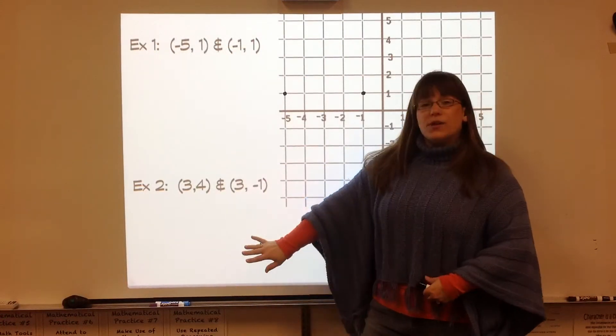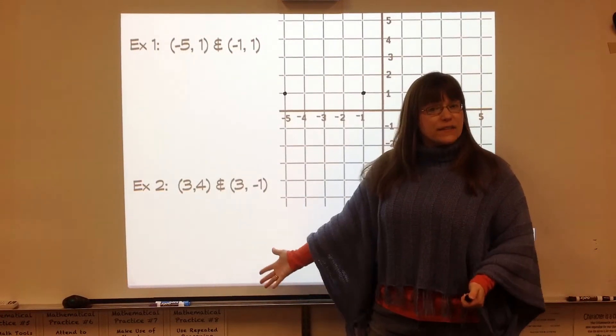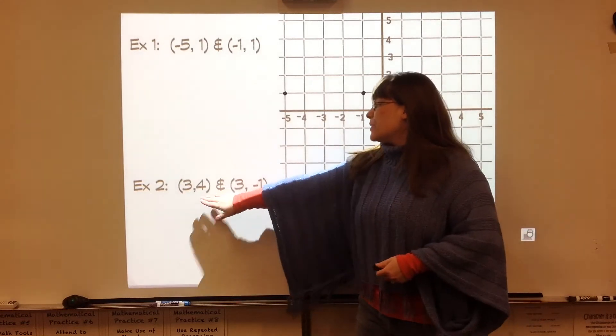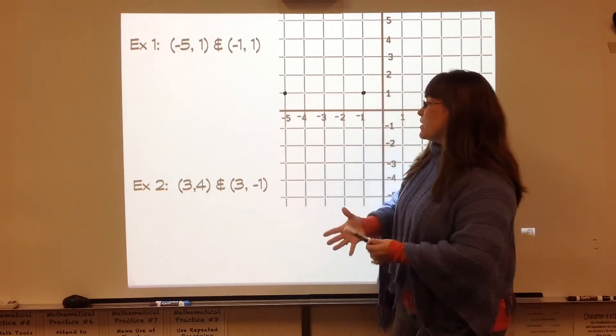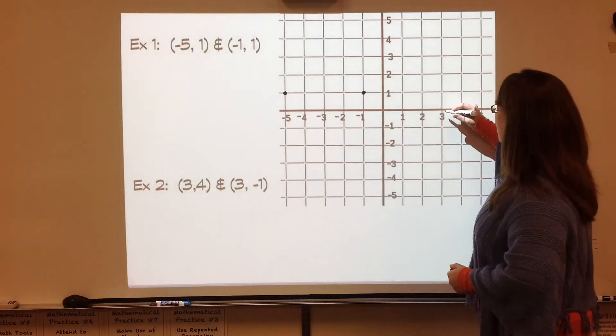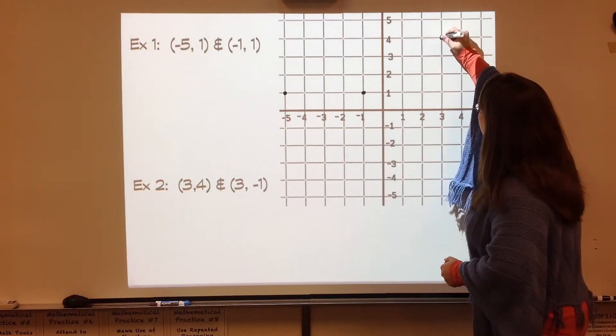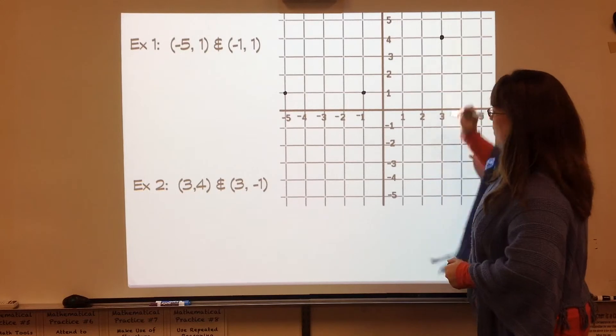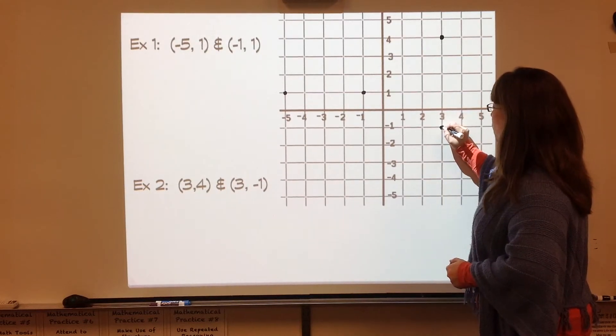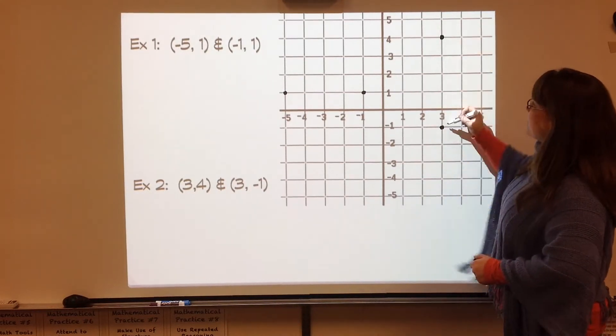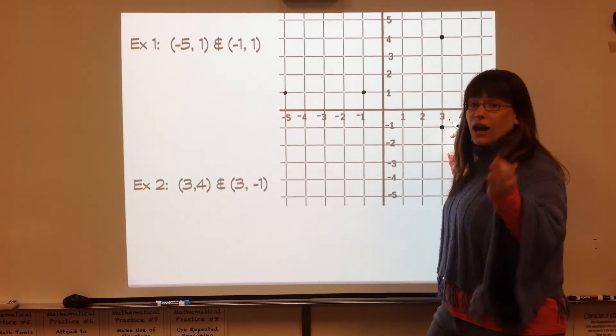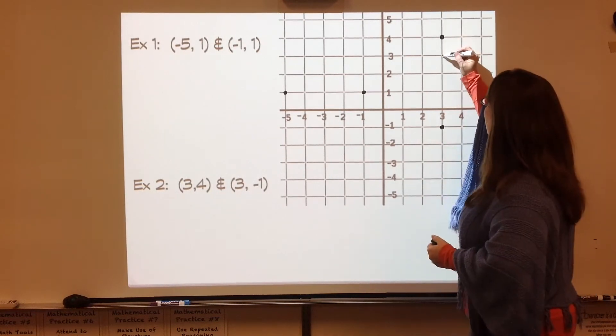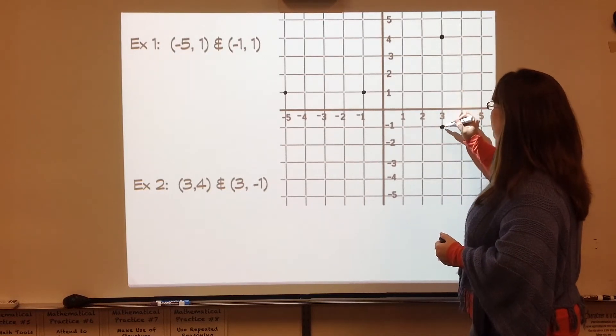So example two, we have two points. We need to find the distance between three comma four and three comma negative one. So I'm going to graph those first so we can see that they are indeed in quadrant one and quadrant four. I need to find the distance between these two points. Again, I can just count the spaces. One, two, three, four, five.